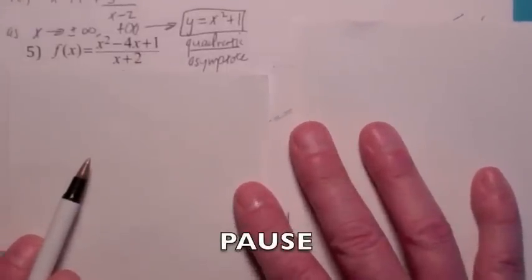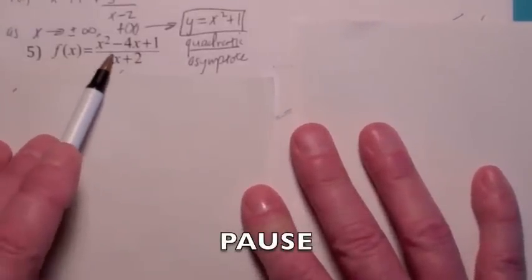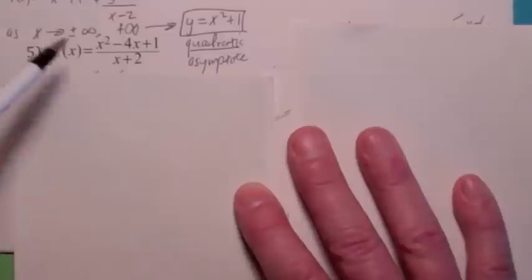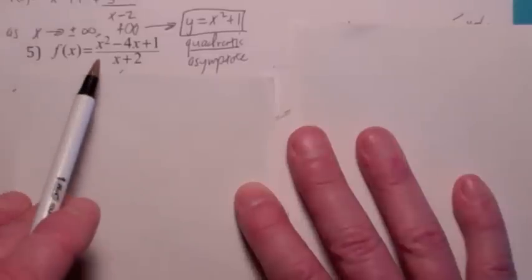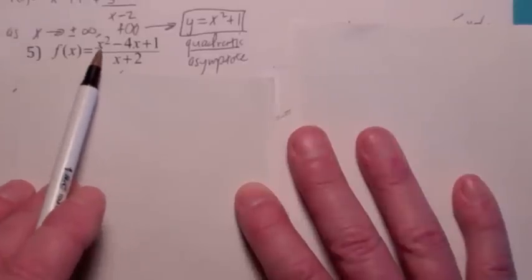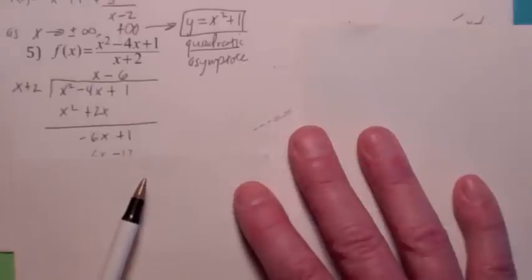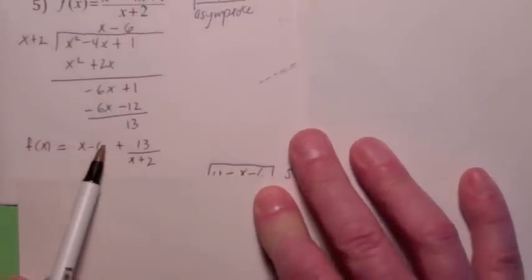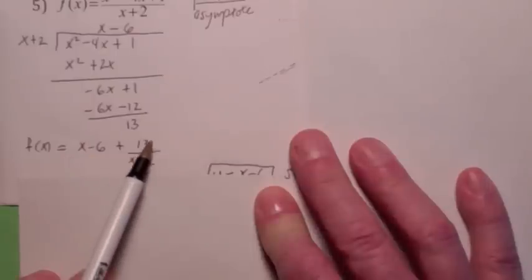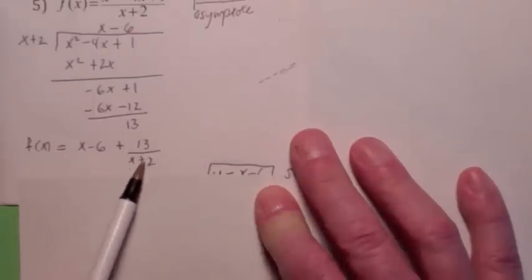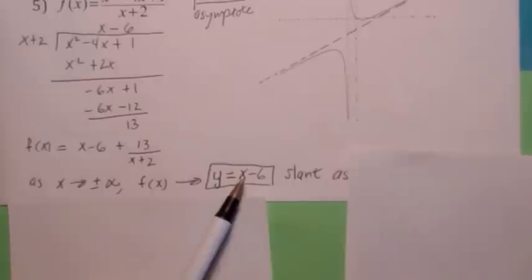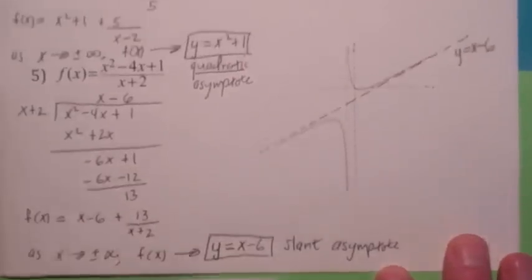Try this one on your own — go ahead and hit the pause button. Determine the end behavior. The top has degree 2 and the bottom has degree 1, so it's going to be a linear asymptote. Use long division to find it. The function can be written as the quotient plus a remainder over the divisor. That remainder term goes to 0 as x goes to infinity. You should have gotten a slant asymptote of y equals x minus 6.